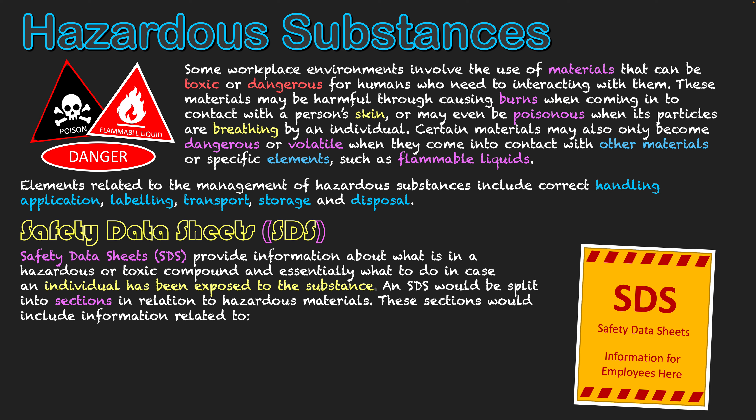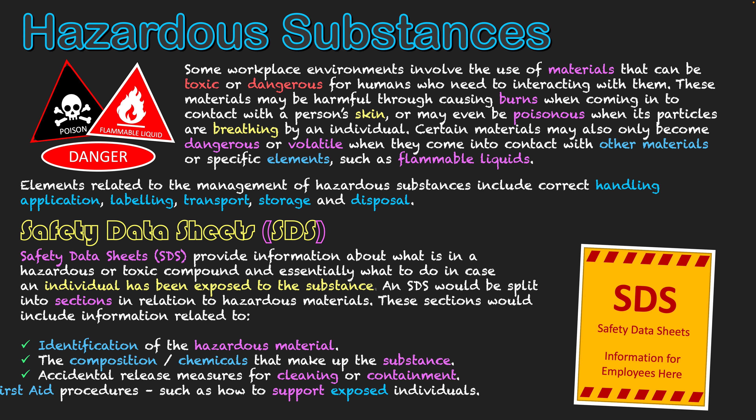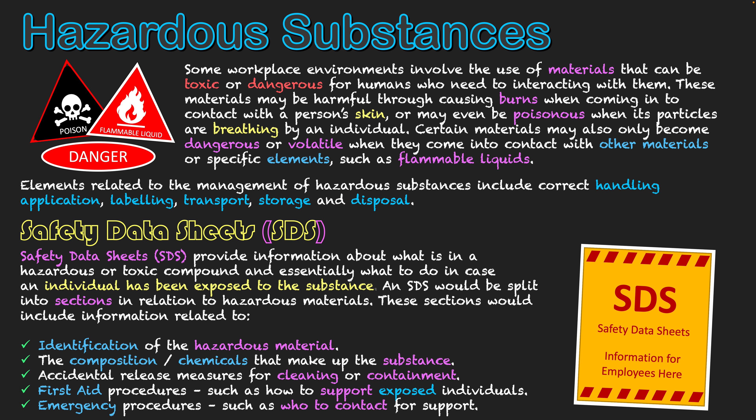The SDS is split into a number of sections and provides information about all the different types of chemicals in the environment. This includes how to actually identify the hazardous material — how do I know that object is dangerous, and what will signify that to me? It also covers the composition or chemicals that actually make up the substance, which should also be on the labeling, but can be referred to in the SDS as well.